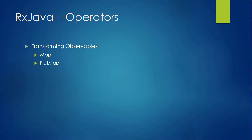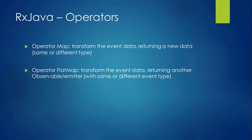These two operators are called observable transforming operators. These operators are basically used to transform data. The operator map transforms the event data returning new data that can be from the same or a different type. The operator flatMap transforms the event data returning another observable or emitter with the same or different event type. Let's imagine that you have a Single.just that emits an event with value 10.